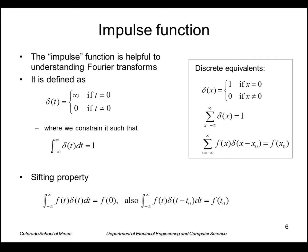In the discrete domain, very similar, the delta function is defined all zeros except at the origin where it's equal to one. And we also have the equivalent sifting property in the discrete domain.